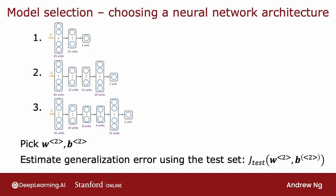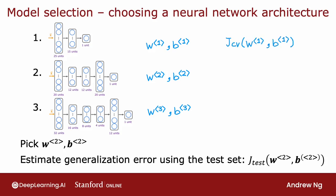To help you decide how many layers and how many hidden units per layer your neural network should have, you can train all three models and end up with parameters w1,b1 for the first model, w2,b2 for the second, and w3,b3 for the third. You can then evaluate each network's performance using JCV on your cross-validation set. Since this is a classification problem, JCV would most commonly be computed as the fraction of cross-validation examples that the algorithm has misclassified.